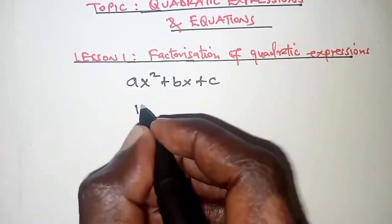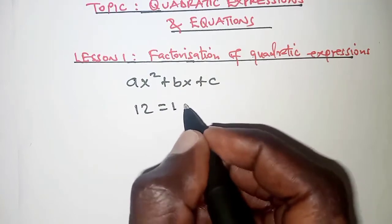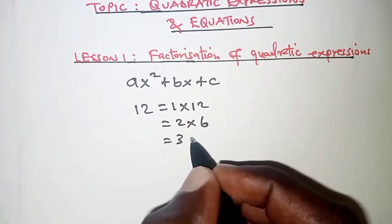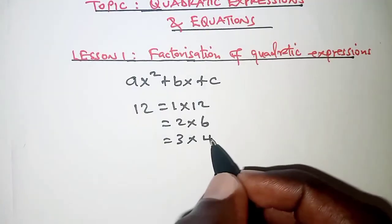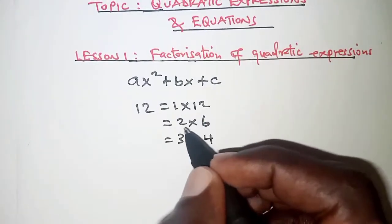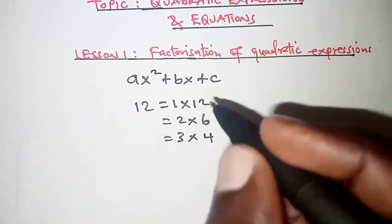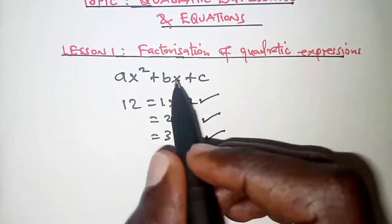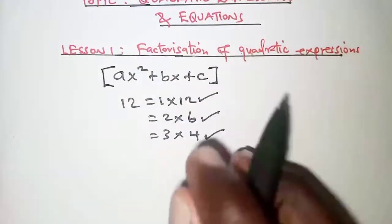Just the same way that if we're given a number, say 12, we can express it as a product of its factors — like 1 times 12, 2 times 6, 3 times 4 — we can stop here because the next number, 4, is already listed. So these are the factors of 12, and we have expressed 12 as a product of its factors. We can also do the same for a quadratic expression, and that is exactly what we are going to look at in this lesson.